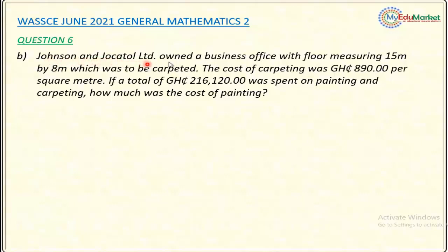Johnson and Jakarta Ltd own a business office with a floor measuring 15 meters by 8 meters, which was to be carpeted. The cost of carpeting was 890 Ghanaian cedis per square meter. If a total of 216,120 Ghanaian cedis were spent on painting and carpeting, how much was the cost of painting? This is the question I will attempt to answer now.